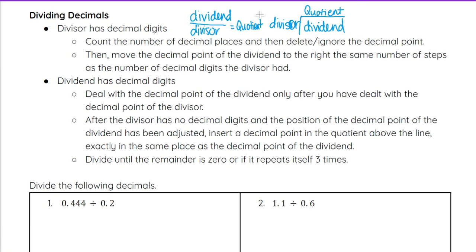So with that in mind, if the divisor has decimal digits, so that would be the bottom number or what we're dividing by, then we want to count the number of decimal places and delete or ignore the decimal point. And then move the decimal point of the dividend to the right the same number of steps as the number of decimal digits the divisor had. So let me show you what I mean by that down on example one.